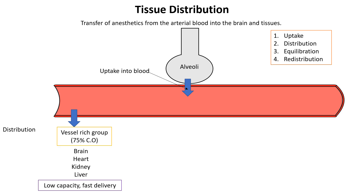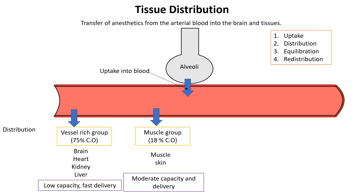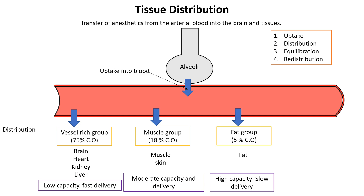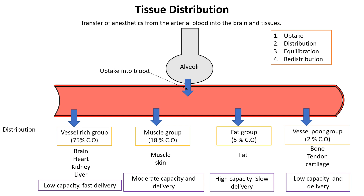The brain equilibrates quickly due to its high perfusion and lipid content, resulting in rapid induction of anesthesia. The muscle group, which has moderate perfusion and capacity, absorbs the anesthetic more slowly but still contributes significantly to distribution. The fat group, with its low perfusion but high capacity, absorbs the anesthetic slowly and takes much longer to reach equilibrium. Finally, the vessel-poor group, which has very low perfusion, absorbs the anesthetic minimally and plays a negligible role in the initial distribution phase.